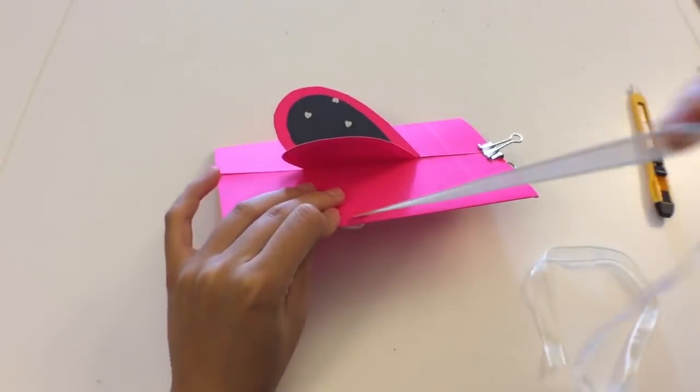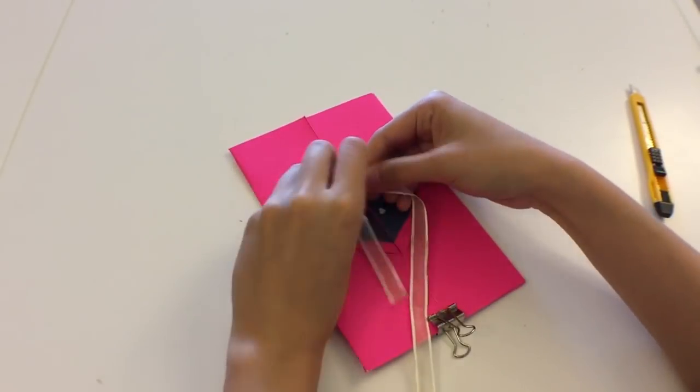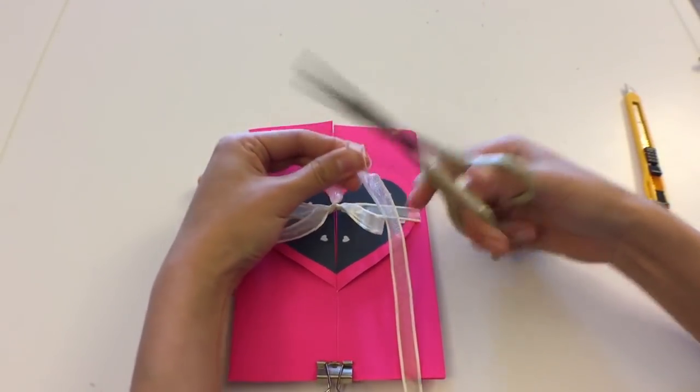Carefully pull it out, and then I just went ahead and tied a little ribbon. I think it just adds something extra to this whole card. And then cut off any excess. And that's it.